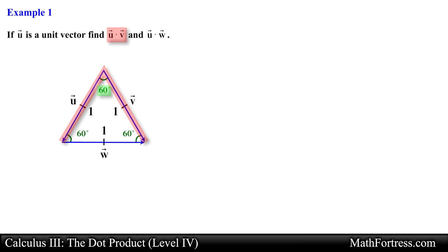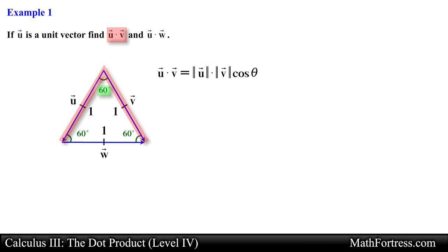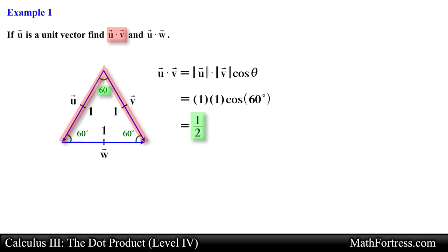With this information we can use the geometric definition of the dot product to find u·v. Substituting the magnitudes and angle we obtain the following expression, and simplifying we obtain one half as the final answer.